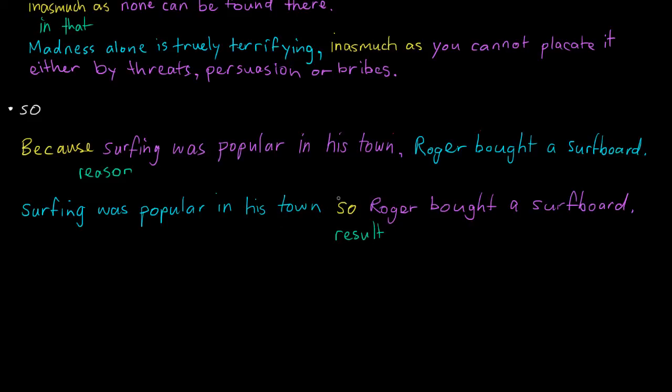So if I had tried to put 'so' here, we'd end up with: So surfing was popular in his town, Roger bought a surfboard. So it makes no sense at all. So that would actually be an error in that position. So 'so' is not quite a reason conjunction. So it's something to be aware of. And so that ends part three of adverbial clauses, and you may now want to watch part four.